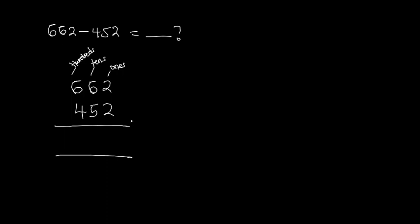We bring our subtraction sign and subtract the ones column first, then the tens, then the hundreds. In the ones column: 2 minus 2 gives 0. Tens column: 6 minus 5 gives 1. Hundreds column: 6 minus 4 gives 2. Our final answer is 210.